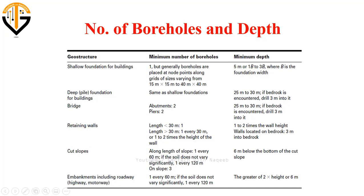The depth for cut slopes should be 6 m below the bottom of the cut slope. For embankments including roadways, highways, and motorways, one borehole is required for every 60 m, and the minimum depth should be the greater of two times the height or 6 m. These are the guidelines regarding the selection of the number of boreholes and their depth.